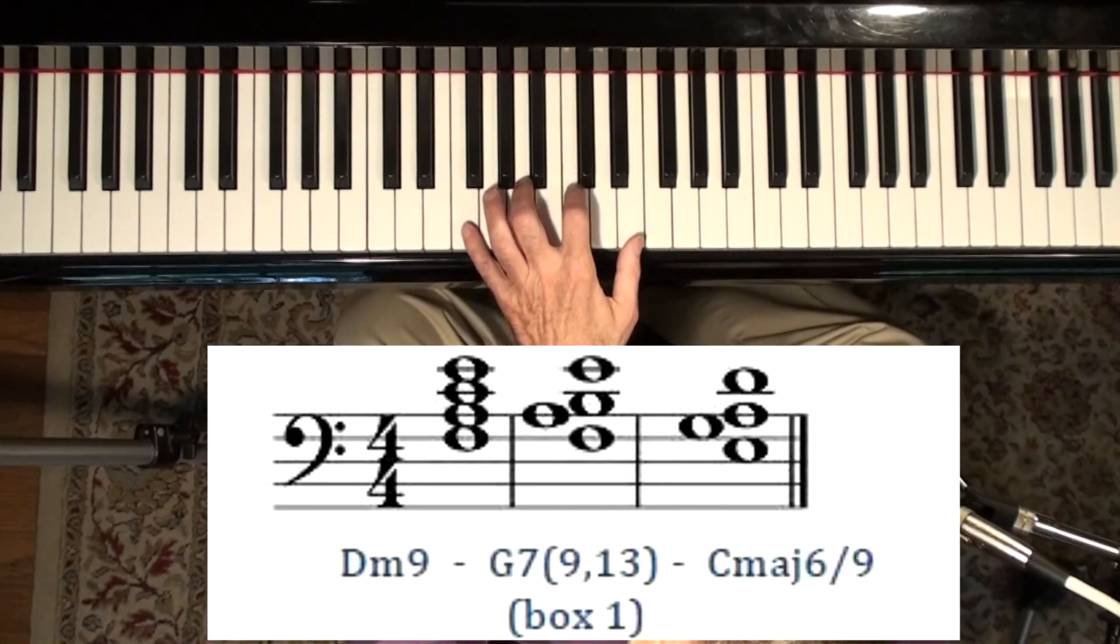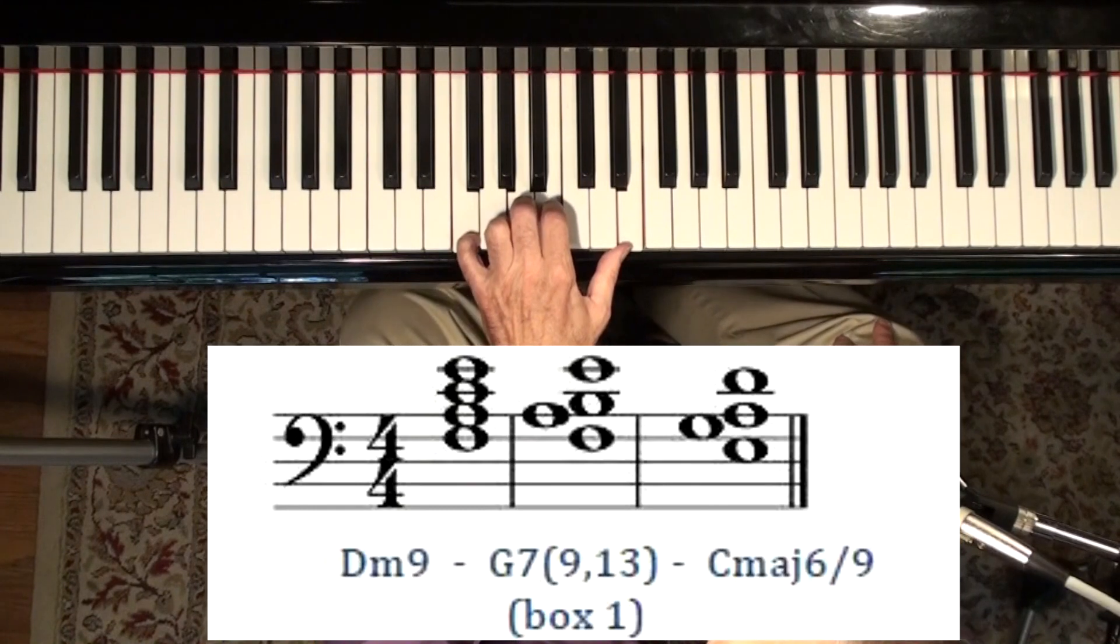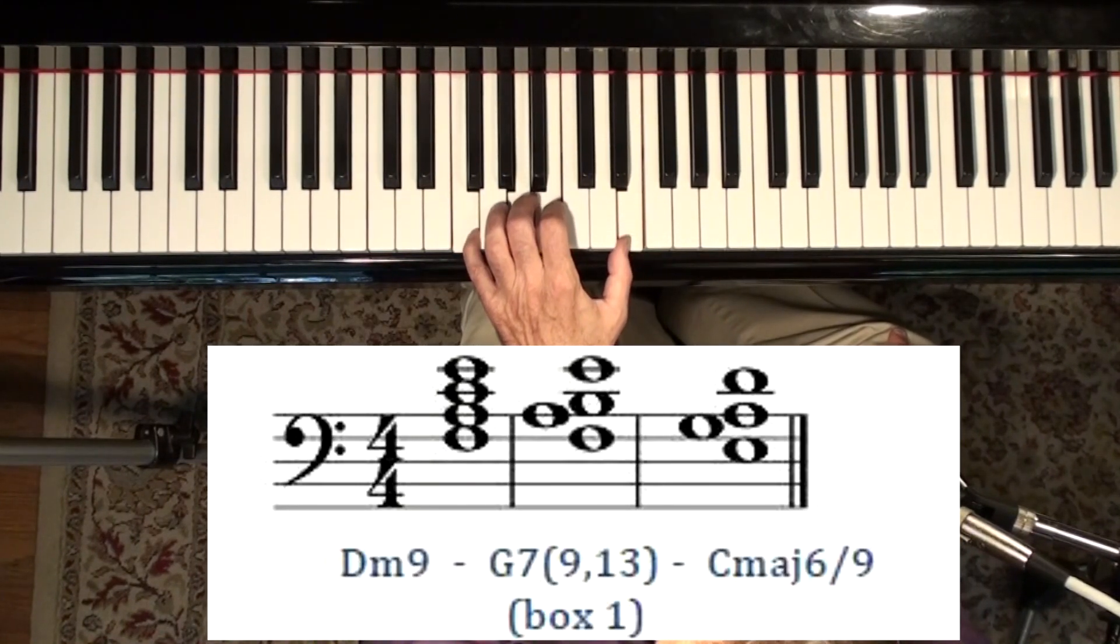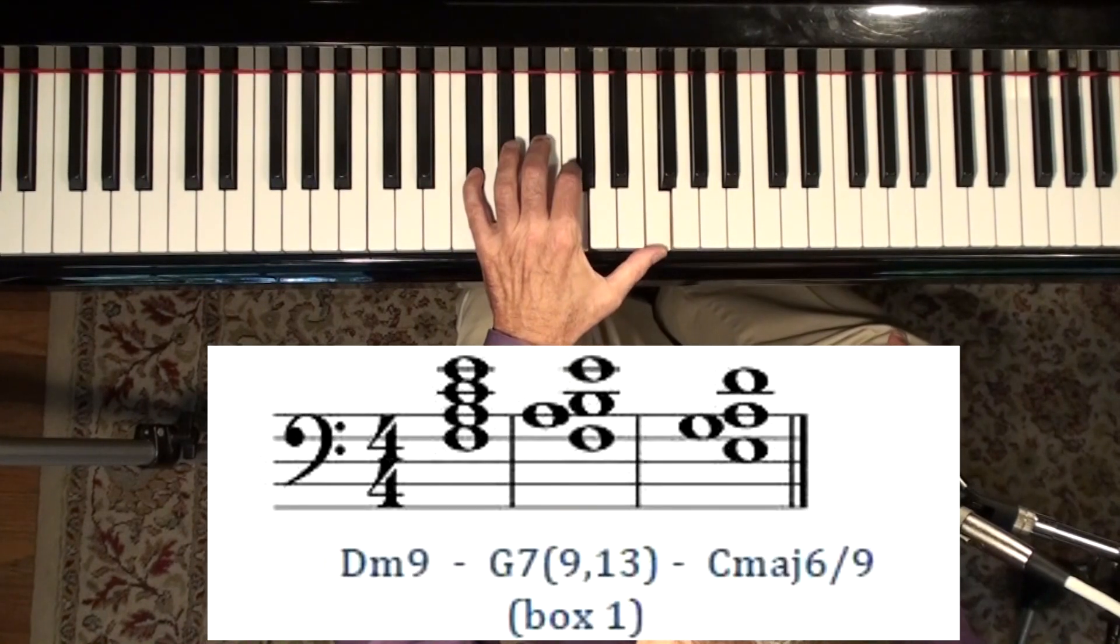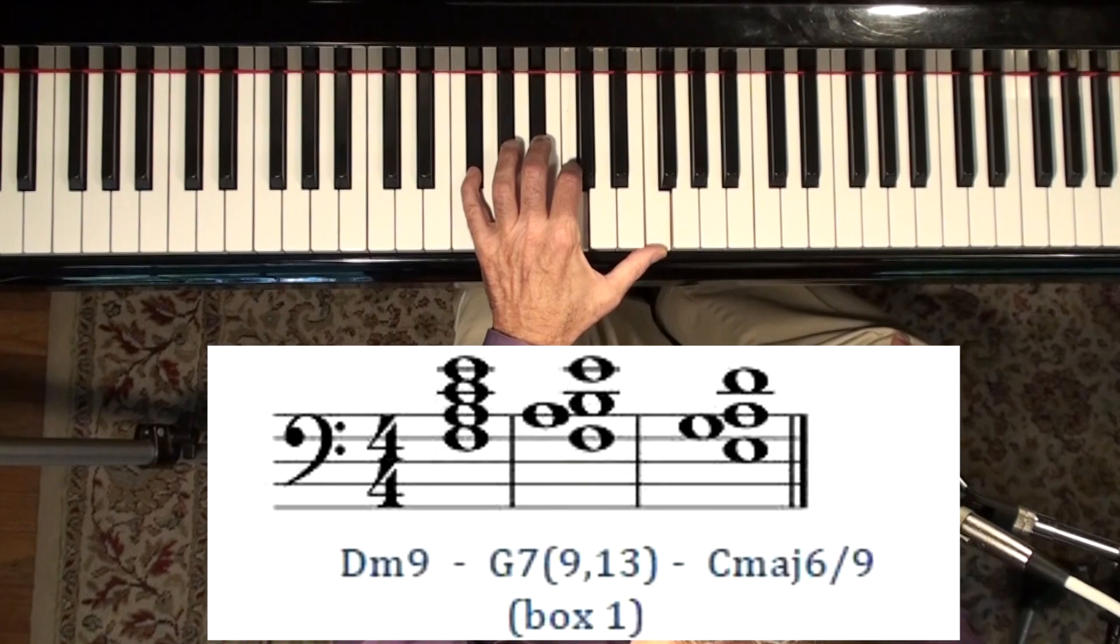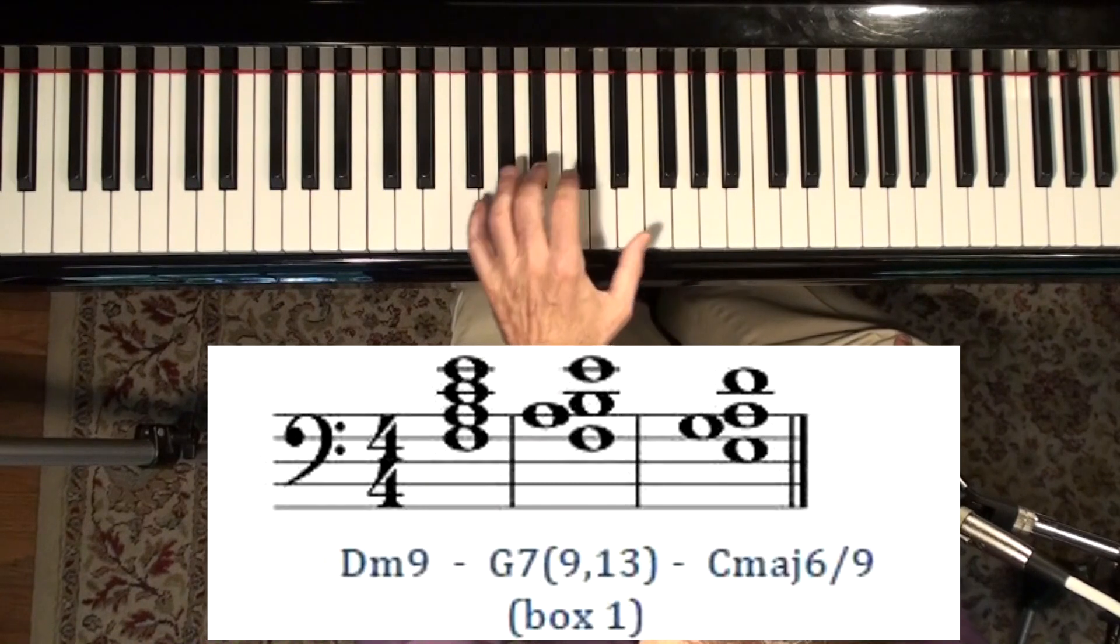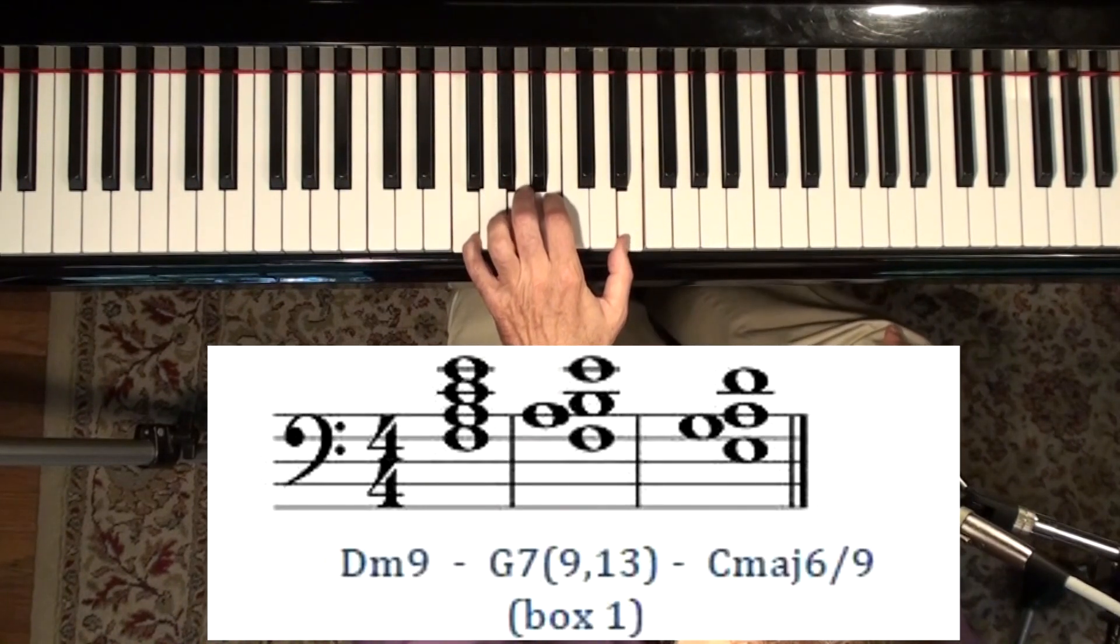But the chord I want to really focus on is this one, the G dominant 7th. And this is what I've called a box voicing, and this particular shape is box 1. It doesn't matter, you can move it up a half step. Now it would be an A flat dominant 7th, and now it would be an A dominant 7th, B flat dominant 7th. You get the idea.